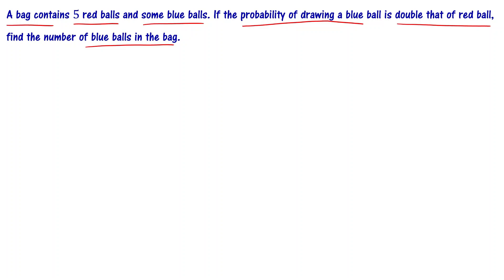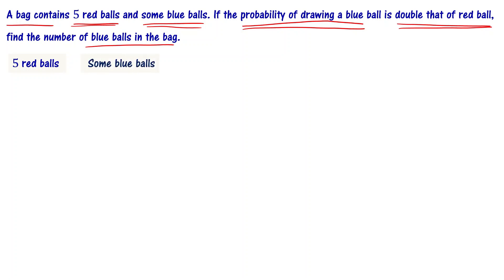The key condition is that the probability of drawing a blue colored ball is equal to double the probability of getting a red colored ball. There are five red colored balls and some unknown blue colored balls. Let us assume that there are x blue colored balls.